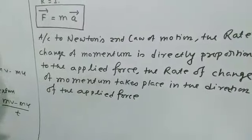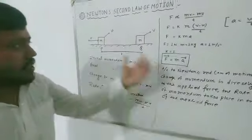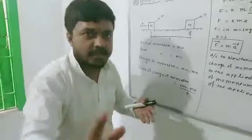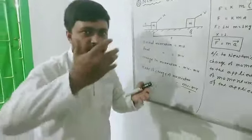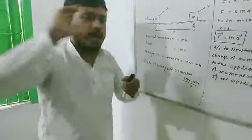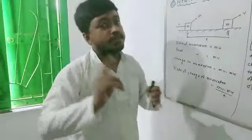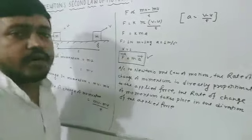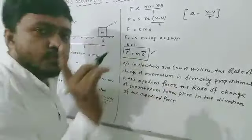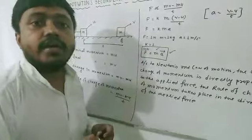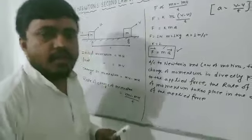The change in momentum takes place in the direction of the applied force — this is the statement of Newton's second law of motion. When you find the mathematical expression, it is F = MA. The force depends on two factors: one is mass and another is acceleration. That means greater mass will provide a greater force.